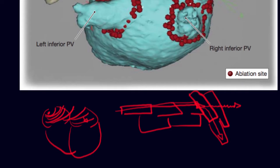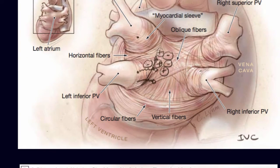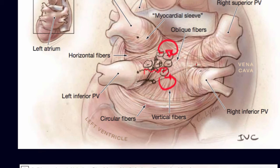When the electricity comes out of the pulmonary veins and travels in multiple directions, there is room for an electrical signal to go one way and then come back to the same place it started — forming a reentry circuit. The same thing happens over here, and over here. That is what we believe gives origin to AFib.